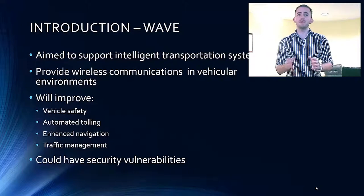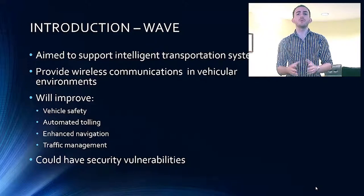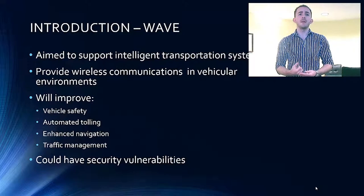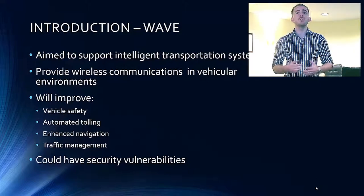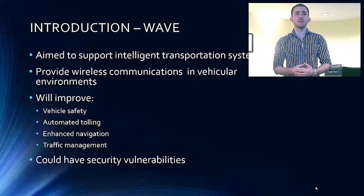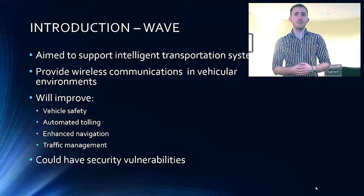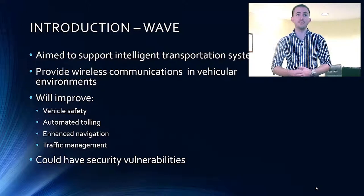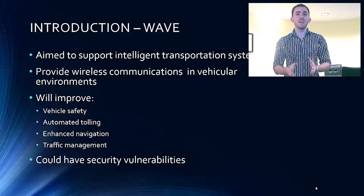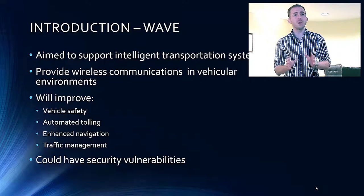With the necessary equipment installed in the vehicles and on the road, WAVE will improve vehicle safety, automated tolling, enhanced navigation and traffic management. With crucial information being passed faultlessly between vehicles over 802.11P, safety on roads can be dramatically improved through features such as forward hazard warning. However, weaknesses in these networks can also make them targets for attacks.